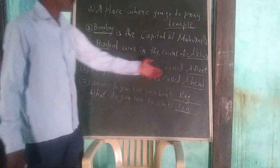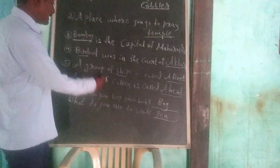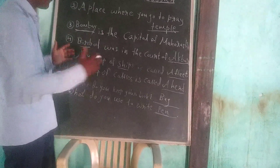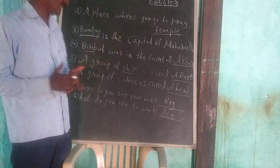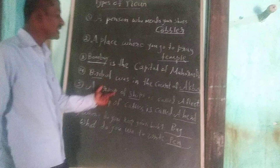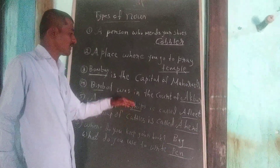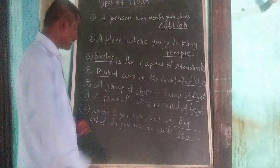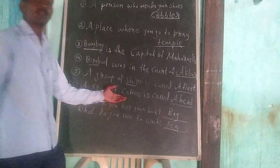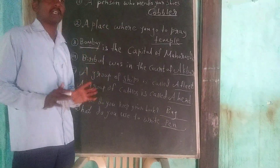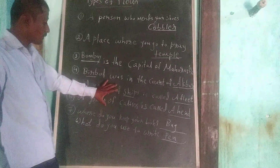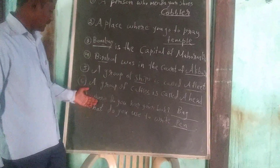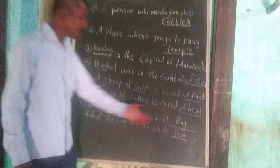The third type is collective noun. A group of ships is called a fleet — it indicates quantity. Instead of saying 'many ships,' we say 'a fleet.' A team of cricket, a herd of cattle — these tell us the number: many cattle, a group. It is saying the quantity, how many are there. This is called a collective noun — it is a group name.